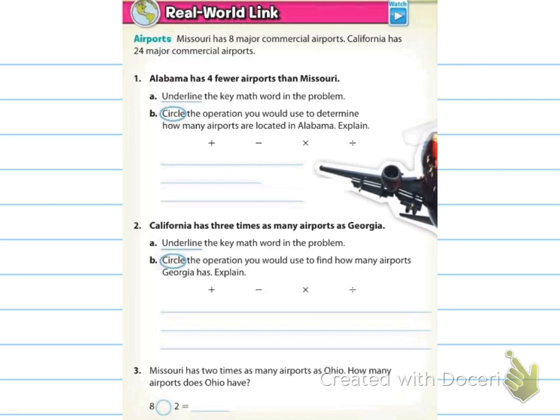Our real world link says Missouri has 8 major commercial airports, and California has 24 major commercial airports. One, two, and three, they want you to fill in the blanks, go step-by-step with their instructions, and we'll come right back and we'll have the answers.